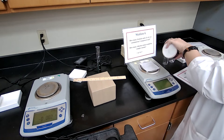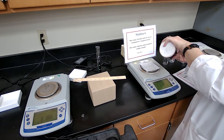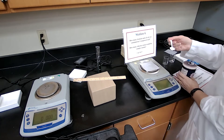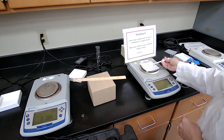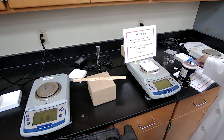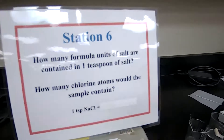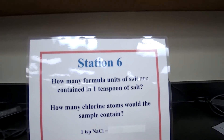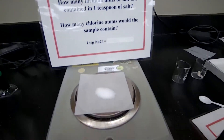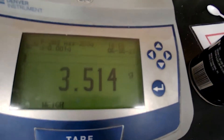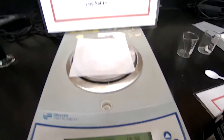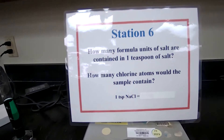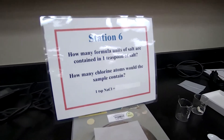At station 6, you are measuring the mass of one teaspoon of salt on weighing paper that has been tared. You need the chemical formula for each compound — it's either given in the question or the name is given and you will write the chemical formula. Find the molar mass using the periodic table.